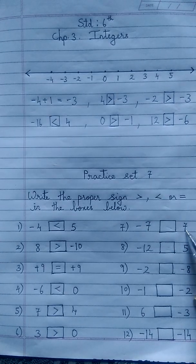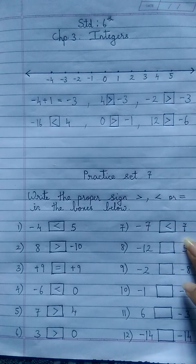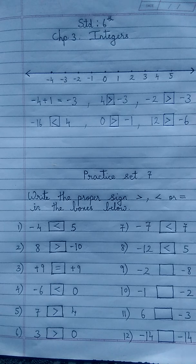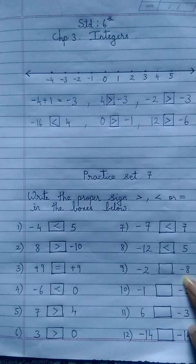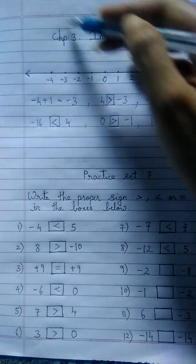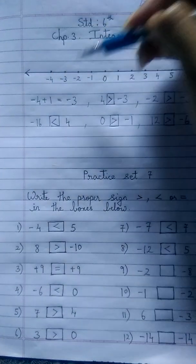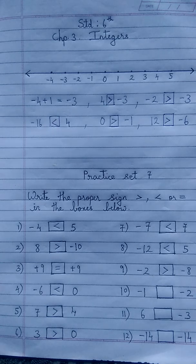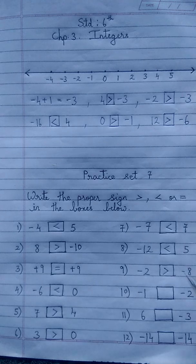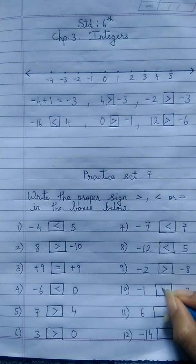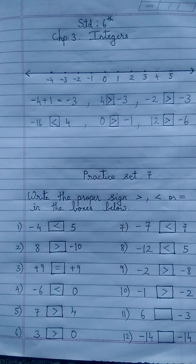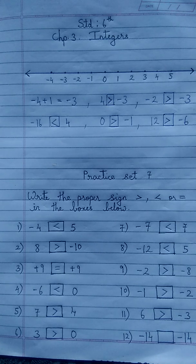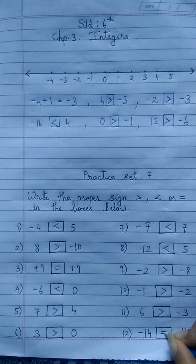Minus 7 and 7: a negative number is always less than a positive number. Minus 12 and 5: again the same rule — negative is less than positive. Now both are negative: minus 2 and minus 8. Minus 2 comes to the right side of the number line, and minus 8 comes further to the left, so minus 2 is greater than minus 8. Minus 1 and minus 2: minus 1 comes to the right and minus 2 to the left, so minus 1 is greater. Then 6 and minus 3: without much thinking, positive is greater than negative. Finally, minus 14 and minus 14: they are both equal, so we put the equal to sign.